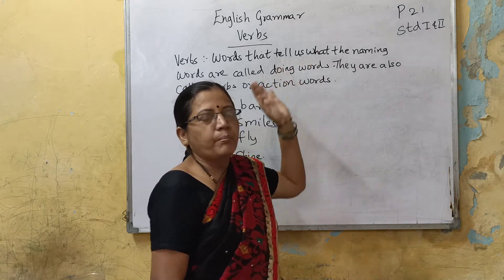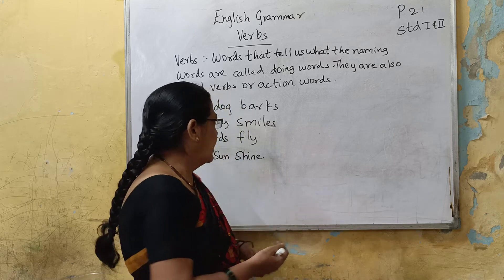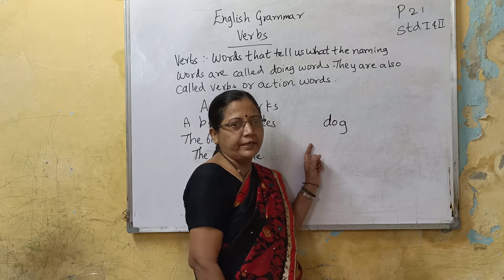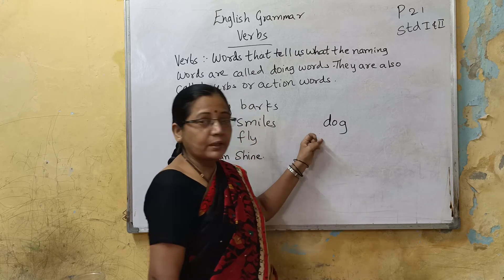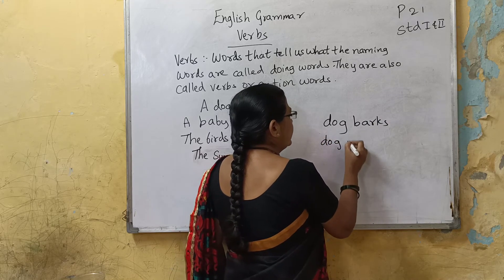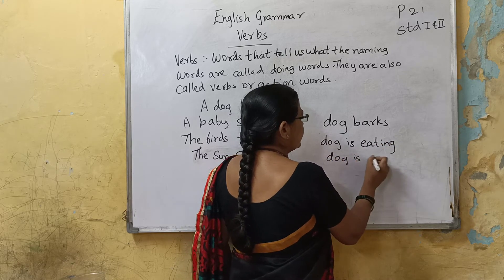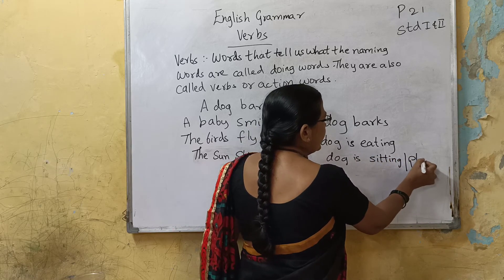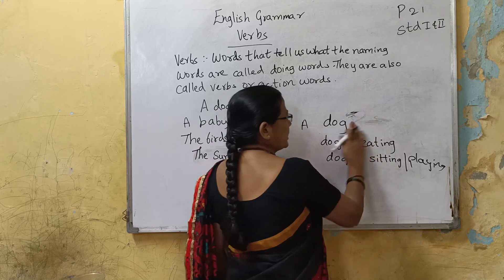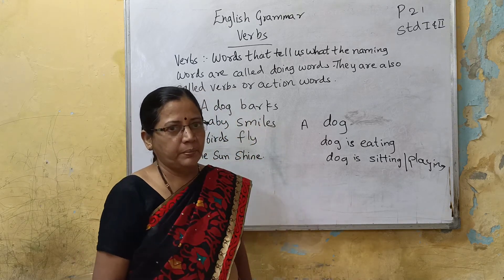So what is verb? Without verb, there is no sentence. Without verb, there is no sentence. For example, just saying 'dog' is not a complete sentence. Dog barks. Dog is eating. So without verb, your sentence is always incomplete — remember that.